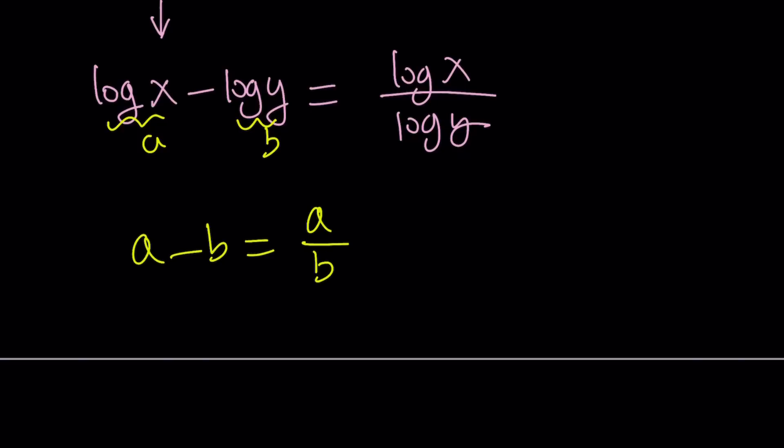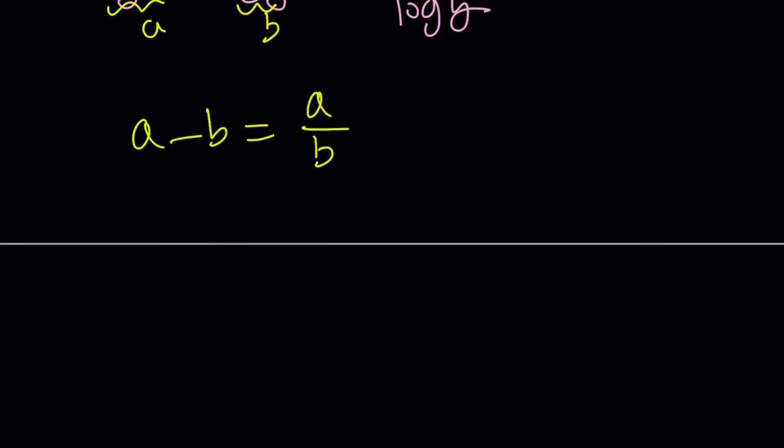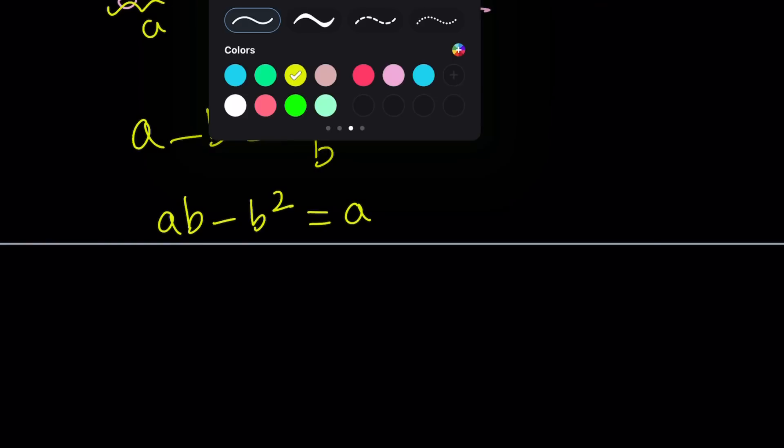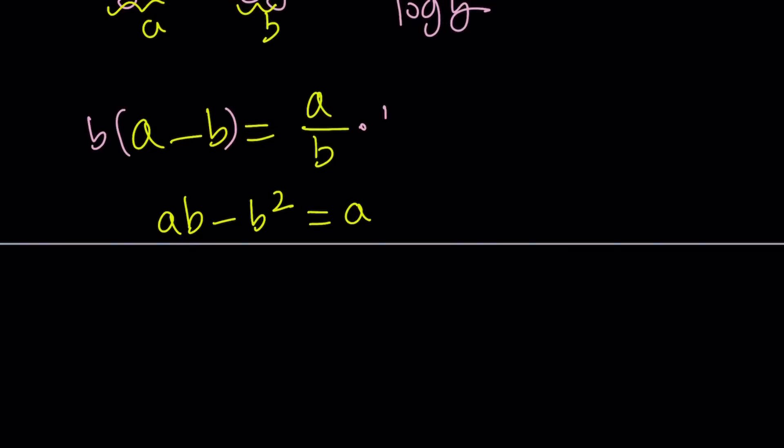Let's solve this equation. Even though it has two variables, we can still solve for one of the variables in terms of the other. Let's cross-multiply, which is something that most people would do. a times b minus b squared equals a. In other words, multiply both sides by b. That b cancels out.